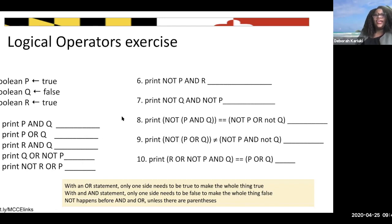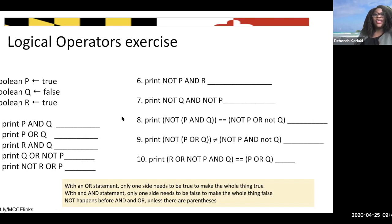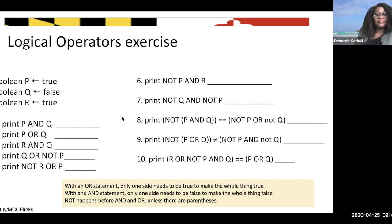Number eight has brackets, so we work the inner brackets first. We have NOT(P AND Q): P is true AND Q is false, so that becomes false. Then we negate it - false becomes true. Then on the other side, (NOT P) OR (NOT Q): NOT P is false, NOT Q is true. So false OR true is true. We have true AND true, so the answer is true.